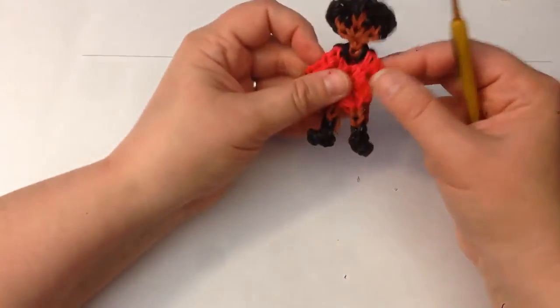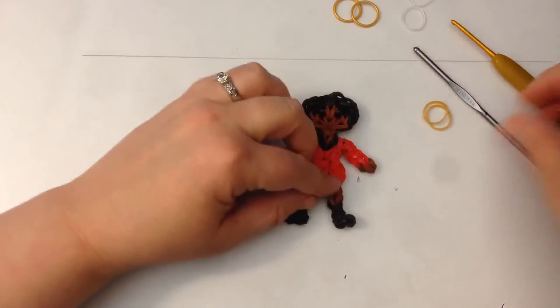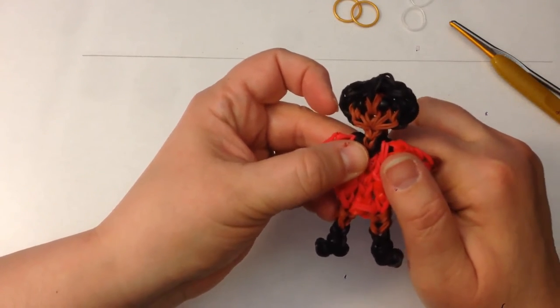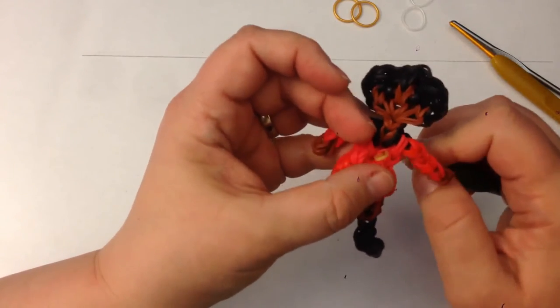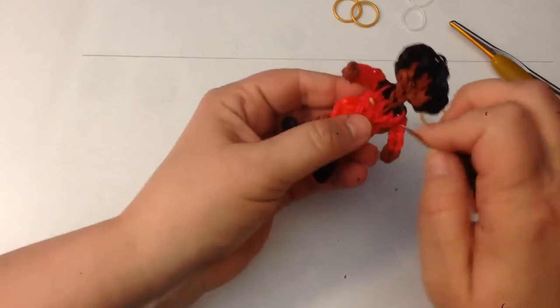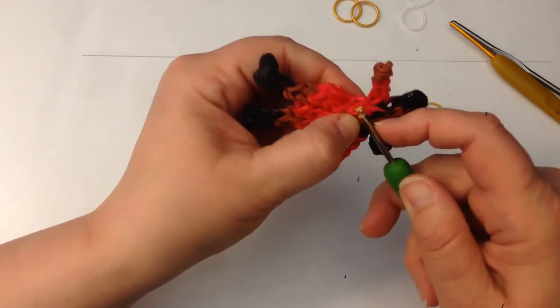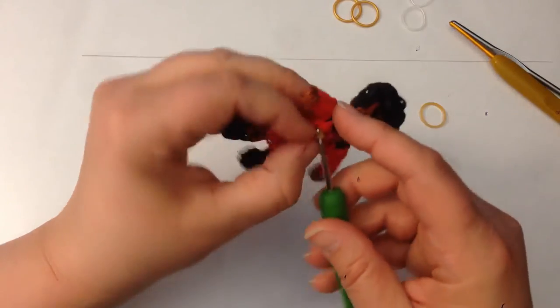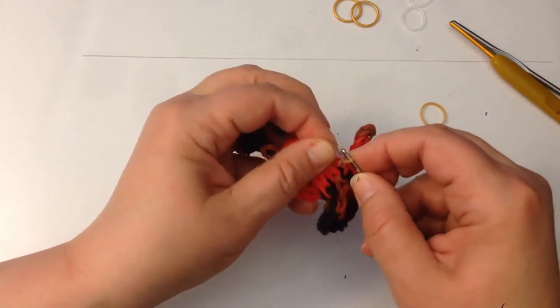So here is our little Uhura. Now we need to use two bands to make her emblem on her shirt. I'm going to push my hook through and grab one of the gold bands and pull it back. And do the same in another spot and pull it back. I'm going to find my S-clip. I'm going to pull the one closest to me over the top of the other so I just have one little loop there to deal with and pop that on the clip.